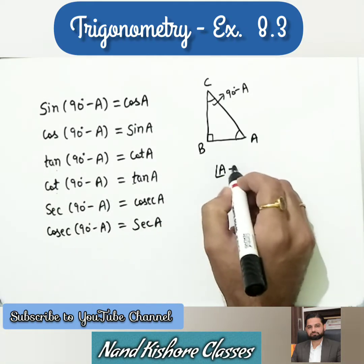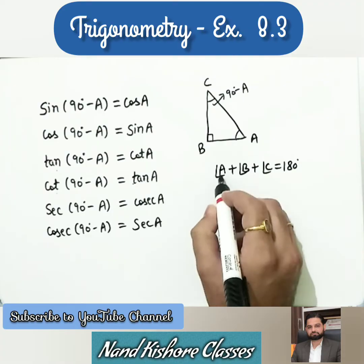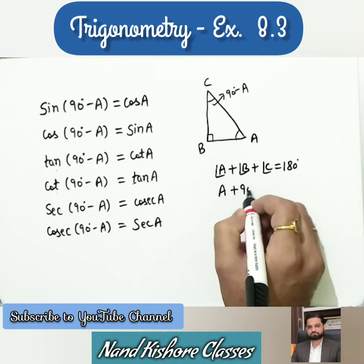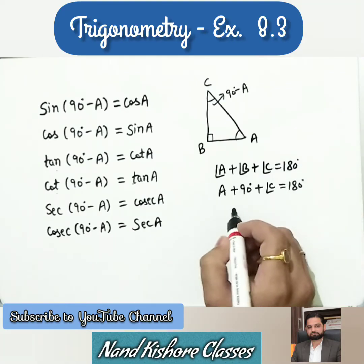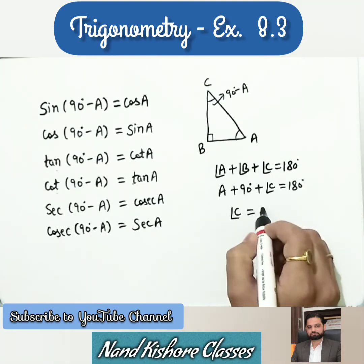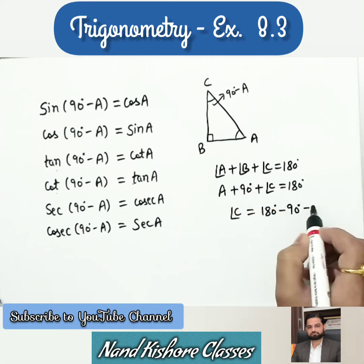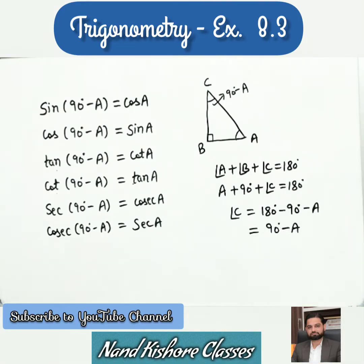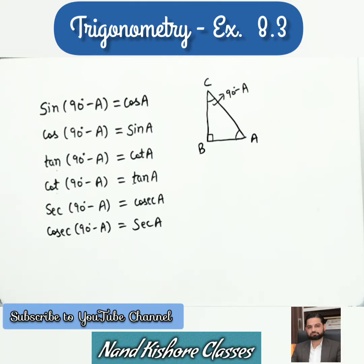Using the angle sum property of a triangle: angle A + angle B + angle C = 180 degrees. Angle B is 90 degrees, so angle C = 180 - 90 - A = 90 minus A. So angle C can be written as 90 minus A.